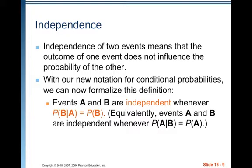Independence of two events means that the outcome of one event does not influence the probability of the other event occurring. With our new notation for conditional probabilities, we can now formalize this definition. Events A and B are independent whenever the probability of B given A is equal to the probability of B. Knowing that A occurs doesn't change the probability that B occurs — it's the same. Your probability of B occurring in general is the same as the probability of B occurring given that A has already occurred. That is what independence means.